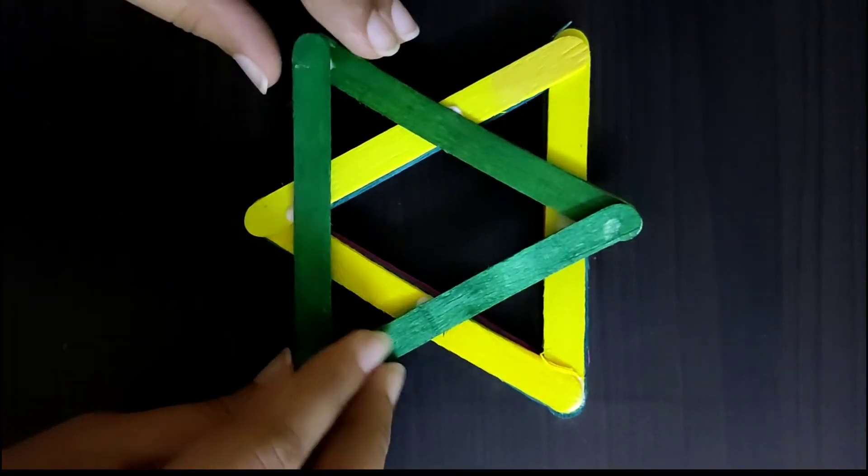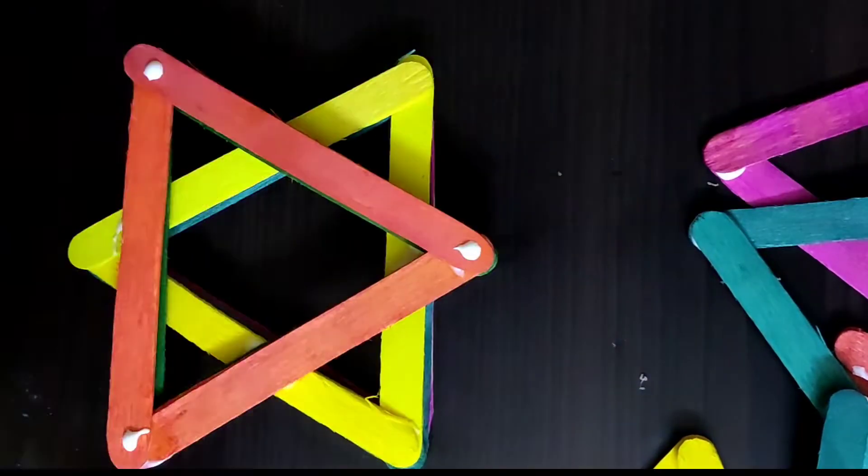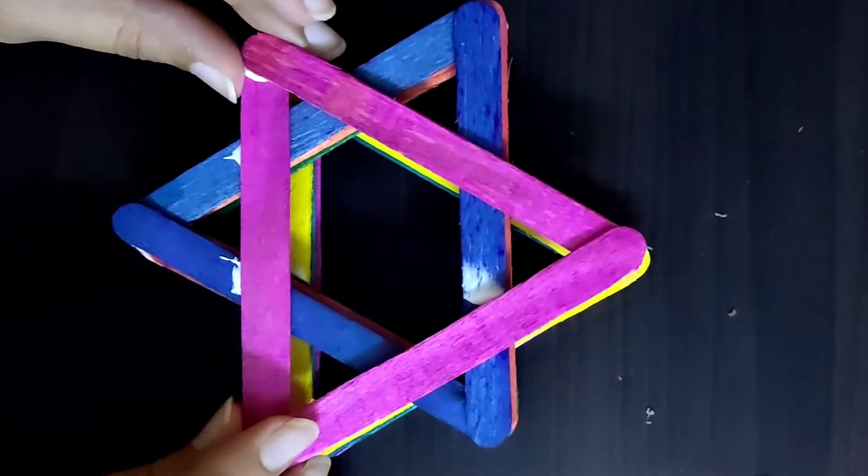Take another pair and paste both the pairs in opposite direction, paste them like a star. Continue with the same steps.